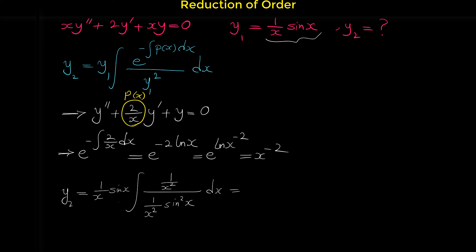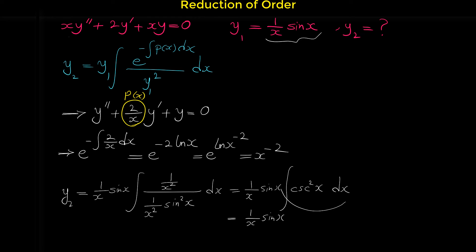After cancellation, we have y2 = (1/(x·sin(x))) · integral of (1/sin²(x)) dx. Now 1/sin²(x) is csc²(x), and we know that the integral of csc²(x) is −cot(x). So the integral evaluates to −cot(x), which equals −cos(x)/sin(x).